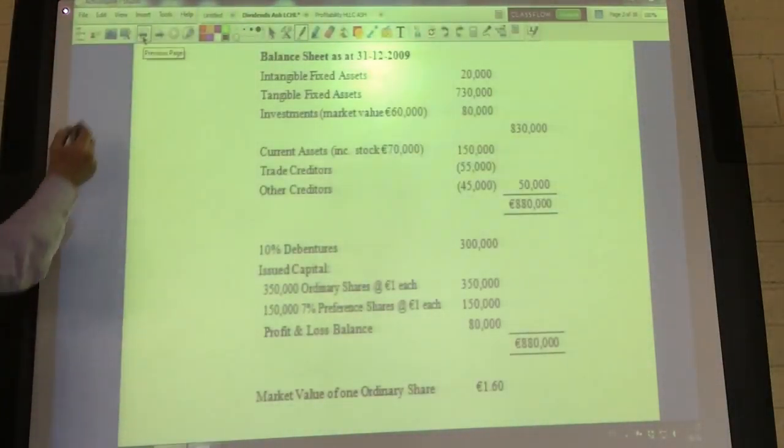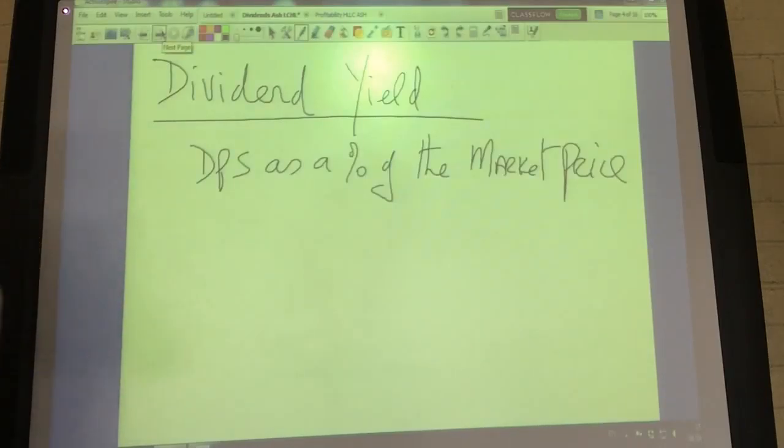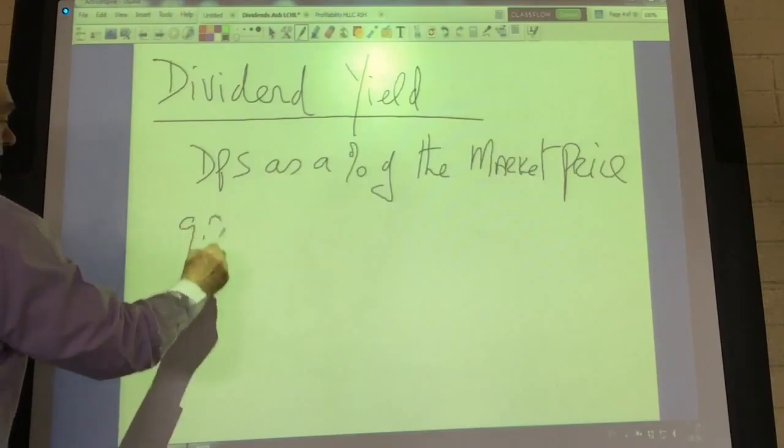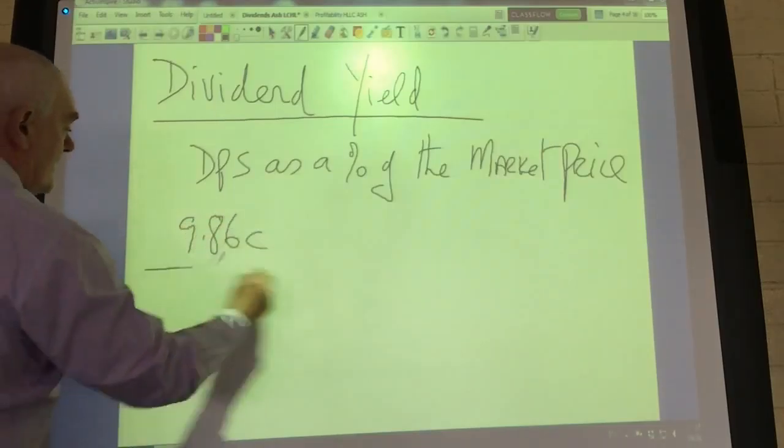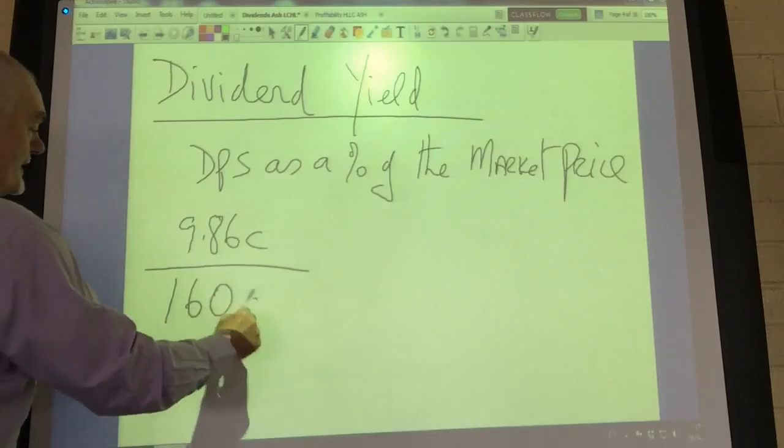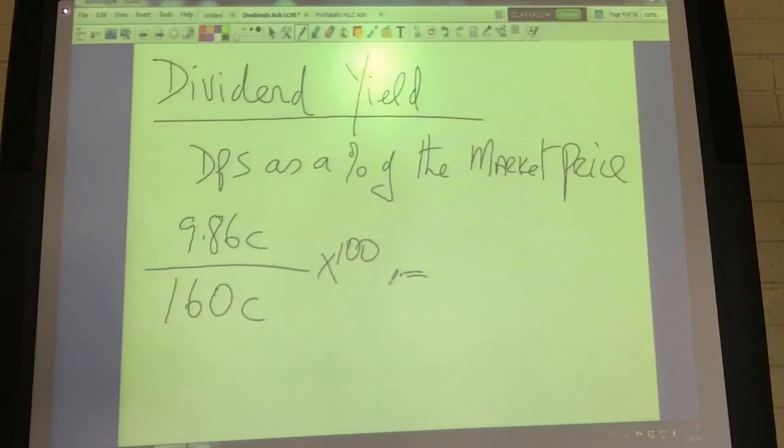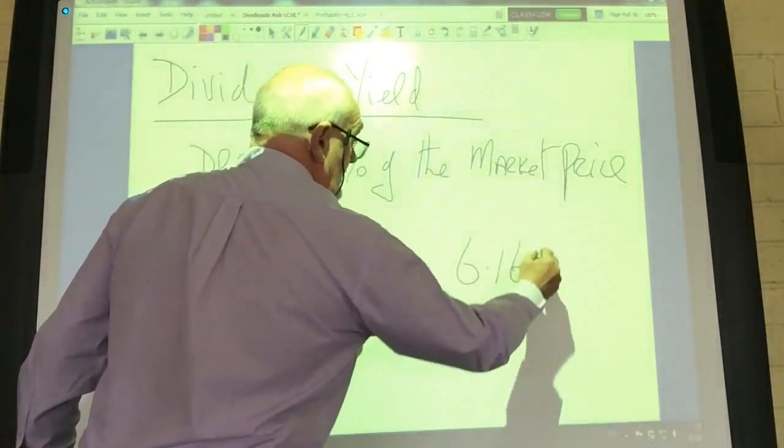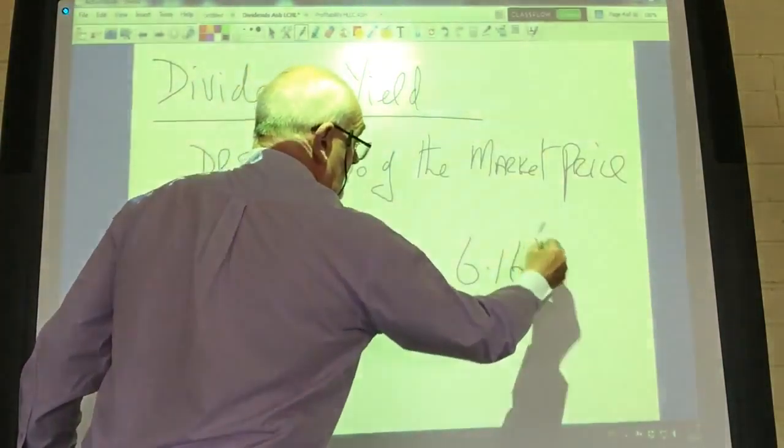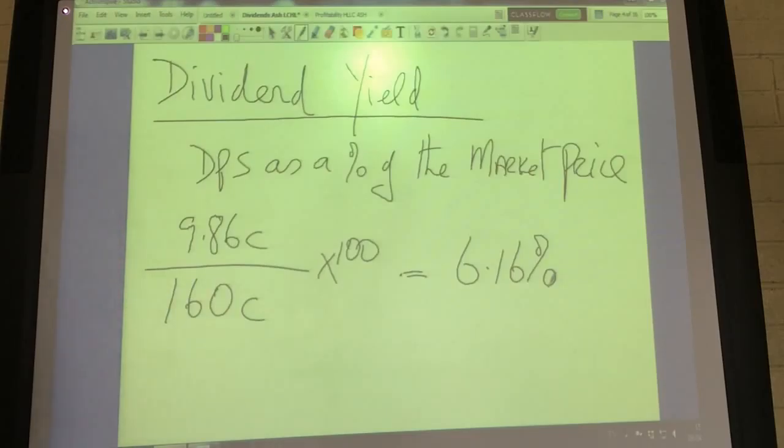That leads us to dividend yield, which expresses the dividend per share, 9.86 cents, as a percentage of the market price of the share. That gives us a dividend yield of 6.16%. That's considerably higher than the return you get on risk-free investments, but it's down on last year's dividend figure.